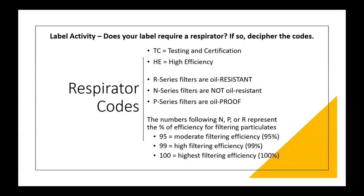Here's how to decipher respirator filter codes: TC equals testing and certification; HE equals high efficiency. R-series filters are oil resistant, N-series are not oil resistant, and P-series are oil proof. The numbers following N, P, or R represent the percentage of filtering efficiency for particulates: 95 equals moderate filtering efficiency at 95%, 99 equals high filtering efficiency at 99%, and 100 equals the highest filtering efficiency at 100%. For example, N95 respirators — widely discussed during COVID-19 — are not resistant to oil and provide 95% moderate filtering efficiency.